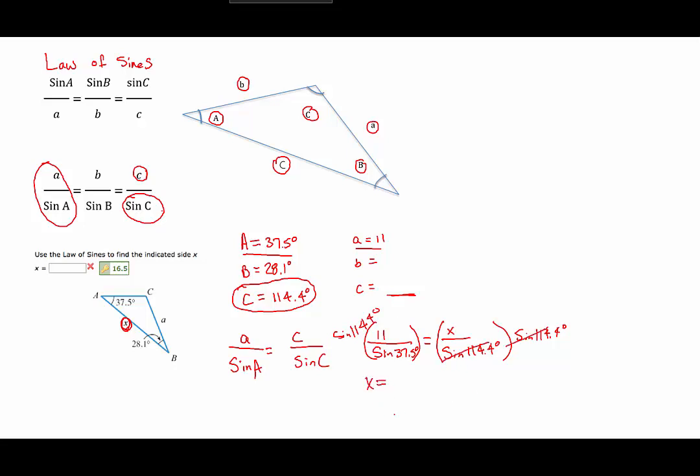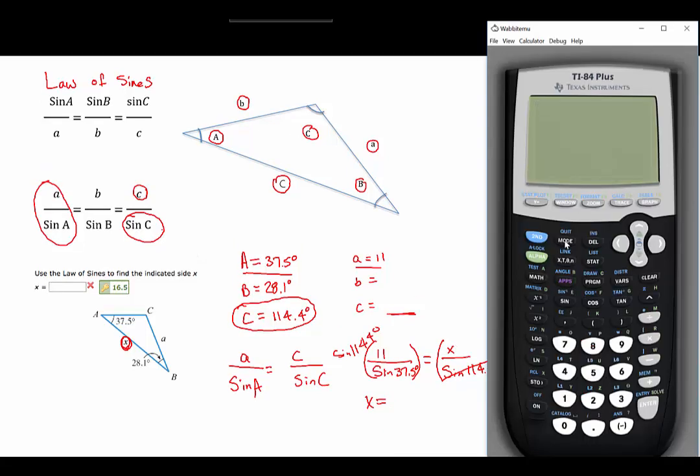And then we'll just use a calculator to solve for X. So the first thing we'll need to do is hit mode and make sure that we are in degree mode. So we'll make sure that degrees is highlighted. Then we'll hit second quit. And we will multiply 11 by the sine of 114.4 degrees. And then divide that by the sine of 37.5 degrees. And that gives us 16.5 if we round to one decimal place.